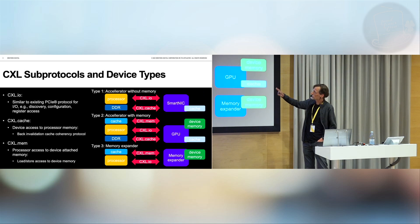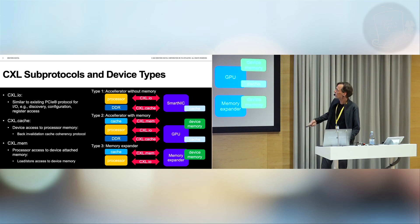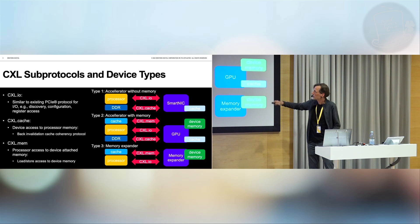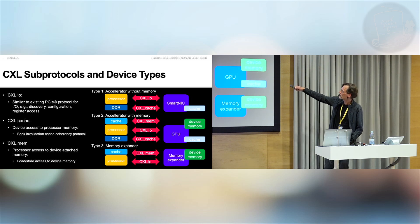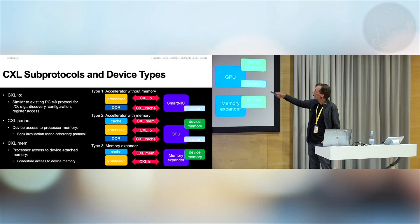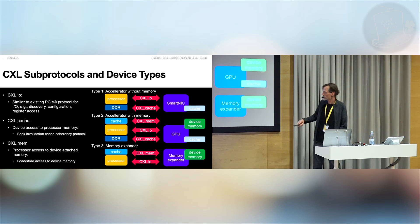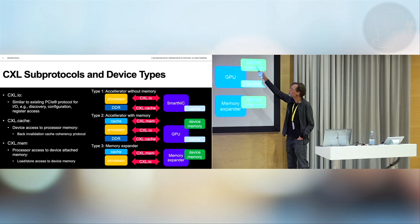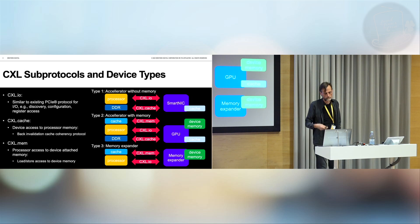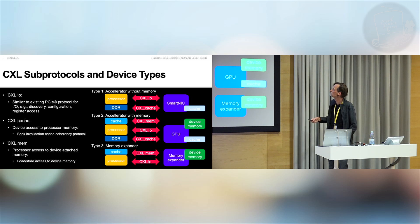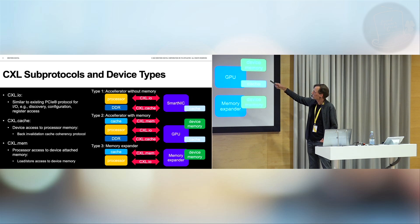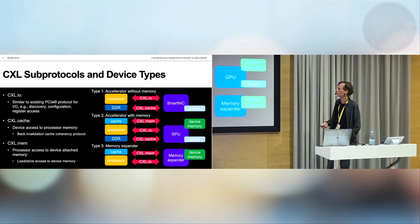In CXL, you distinguish between three different kinds of devices. Type 1 is accelerators without memory. It uses two out of three sub-protocols: CXL I/O, which is regular device I/O similar to PCIe, and CXL cache, which is for accessing host memory from a device. The device can have a cache storing data right from the host system, and will get invalidations or sharing notifications as part of the coherent memory system. One example of a Type 1 device could be a SmartNIC.